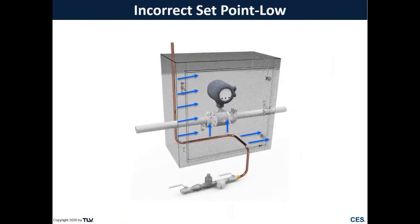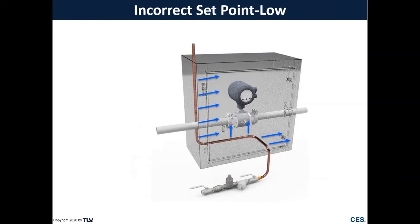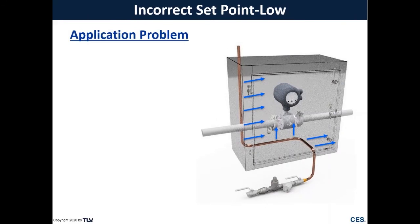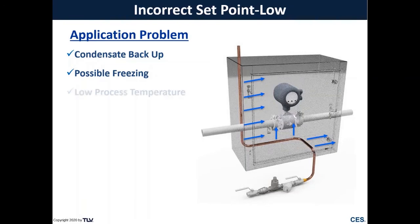Next is an incorrect set point that is too low. Again with an instrument enclosure and a temperature-adjustable steam trap, if it's adjusted too low, it backs up condensate too much and can't provide the heating needed. This can cause condensate to back up, possible freezing in both the tracing line and the instrument enclosure, damaging instruments, and low process temperatures.